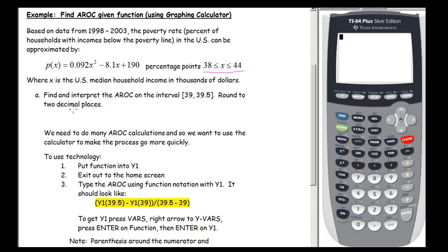What we're supposed to do first is find and interpret the average rate of change on the interval 39 to 39.5, rounding to two decimal places. In this problem and many others, we'll need to find the average rate of change repeatedly, so we want a fast and efficient way to do this. I'm going to show you how to use your calculator.